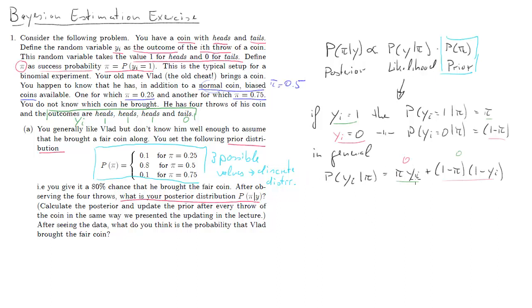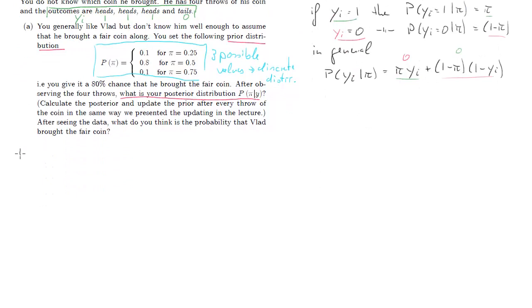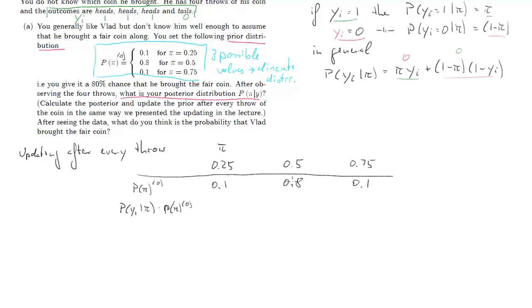So we are going to solve this problem now by updating after every throw. So firstly, our random variable pi, the unknown probability for heads, can take three values only: 0.25, 0.5, or 0.75. Now let's start with our prior distribution here, and we call that the prior 0, our starting prior. That's just transferred from the question information: 0.1, 0.8, or 0.1.